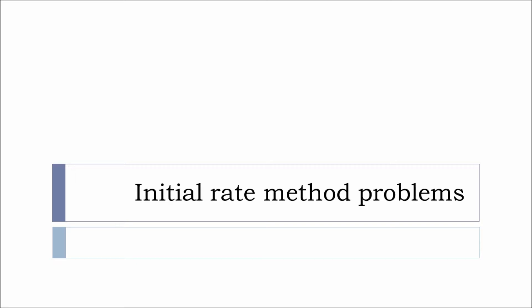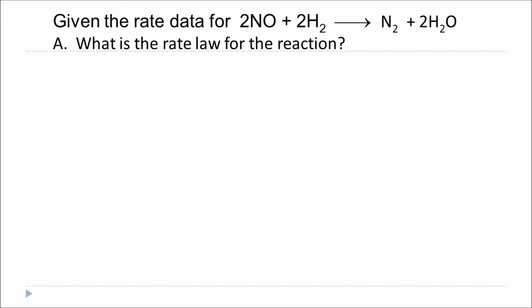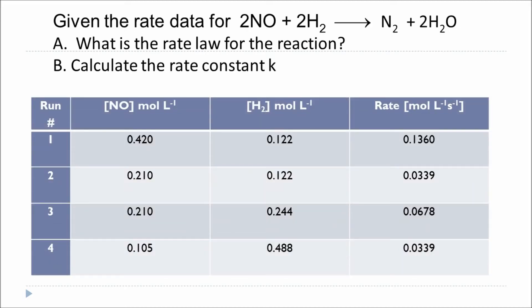In this video I'm going to show you how to solve a problem on the initial rate method so that you can determine the order of a reaction and the individual orders of the reactants. Here is the reaction: nitric oxide and hydrogen react to produce nitrogen and water. You need to find the rate law and calculate the rate constant using the experimental data provided. This data table gives you the information needed for determining the rate law and the order of the reaction.